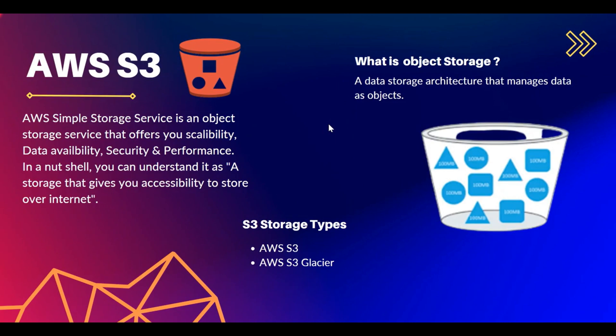Now let's look at AWS S3. S3 stands for Simple Storage Service — it is an object storage service that offers scalability, data availability, security, and performance. In a nutshell, it is a storage that gives you accessibility to store over the internet, meaning you can store and access it from anywhere. There are two main types: the standard AWS S3 bucket and AWS S3 Glacier, which is the cheapest option.